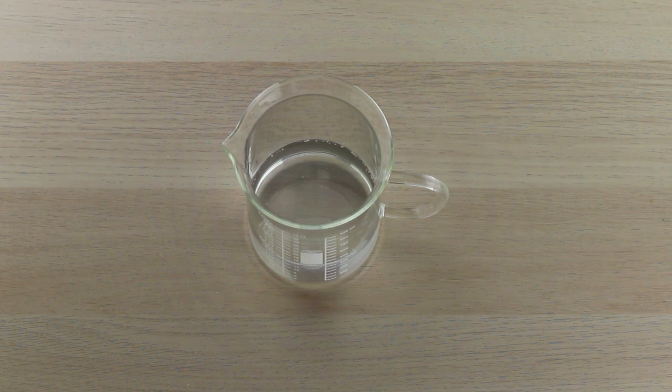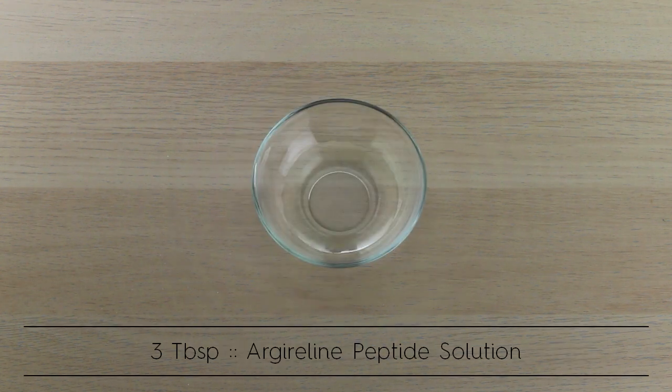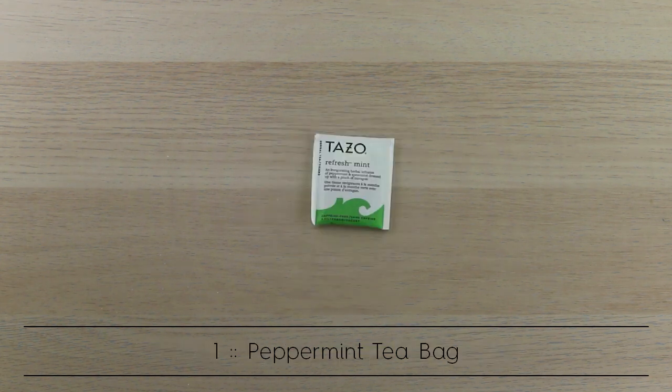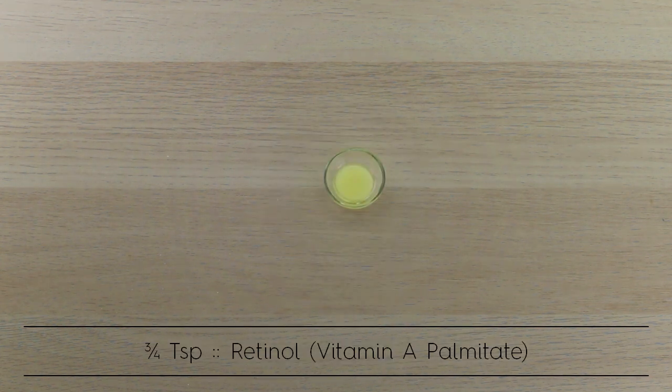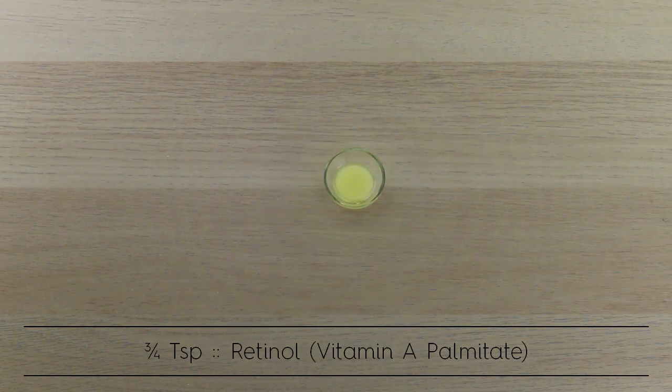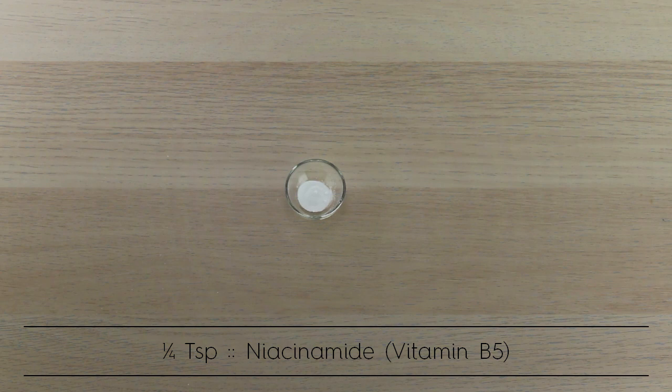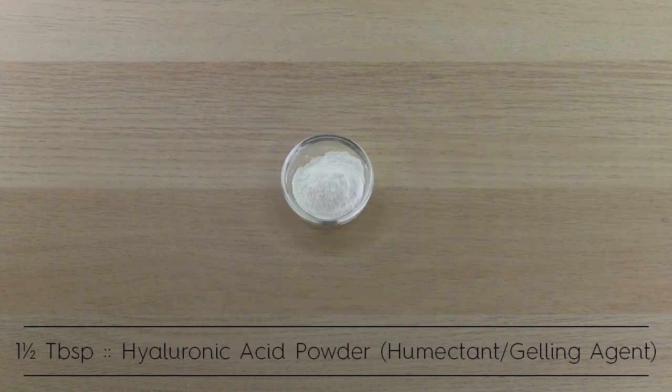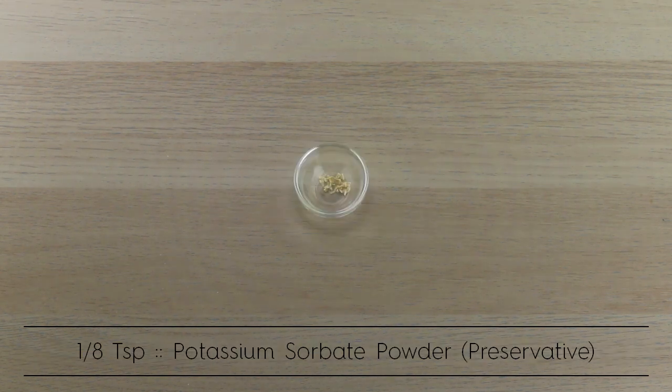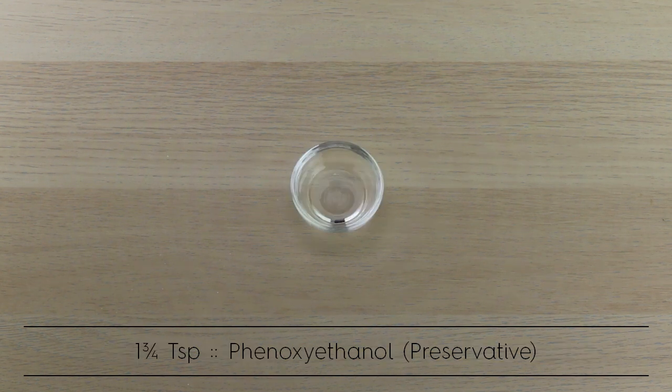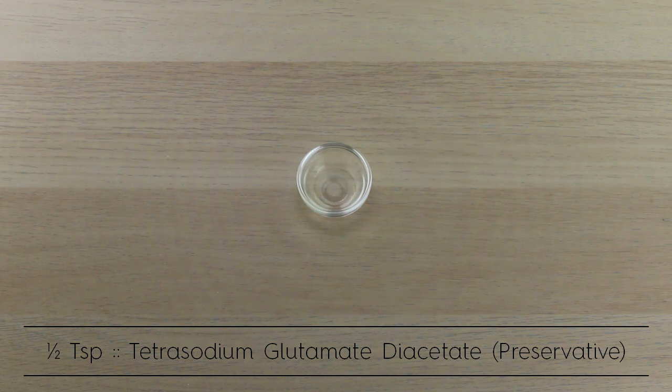You'll need a few ingredients of course. You'll need cucumber distillate, Argelene peptide solution, peppermint tea, some retinol also known as vitamin A, a little bit of niacinamide also known as vitamin B5, hyaluronic acid powder, a little bit of potassium sorbate, phenoxyethanol for preservation, and tetrasodium glutamate diacetate also for preservation.